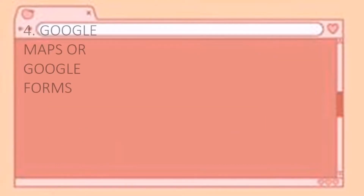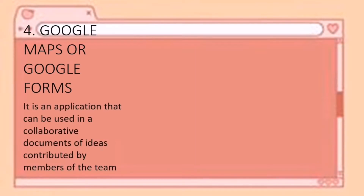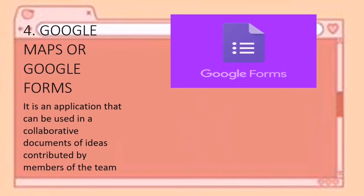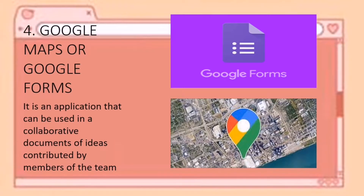Next is Google Maps and Google Forms — applications that can be used for a collaborative document of ideas contributed by members of a team. Google Maps is a web-based service that provides detailed information about geographical regions and sites around the world. Google Forms is free online software that allows you to create surveys and quizzes, as well as to collaboratively edit and share information with other people.